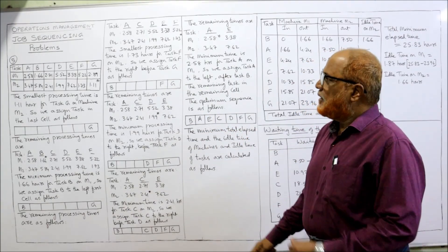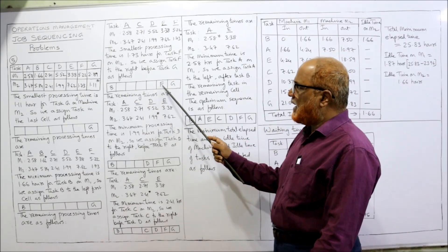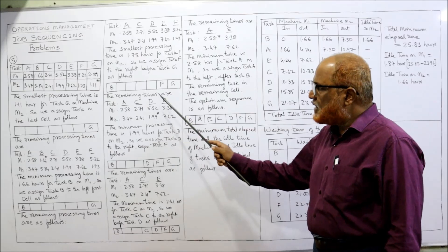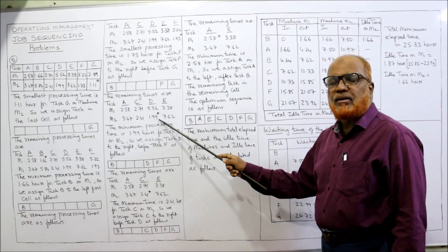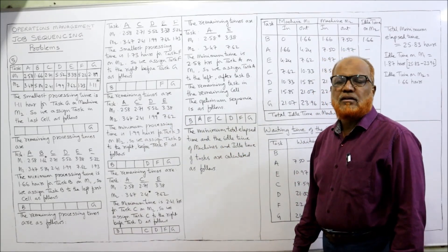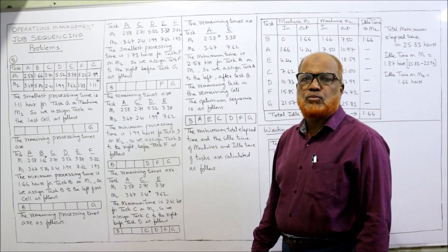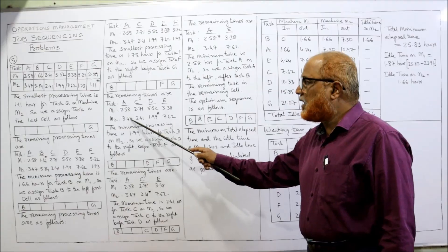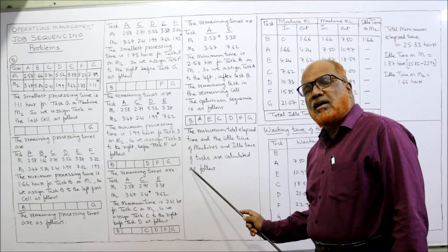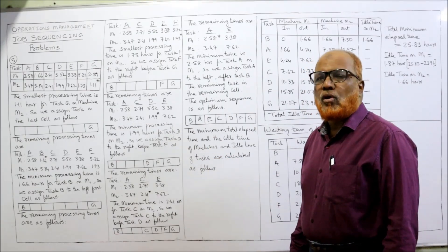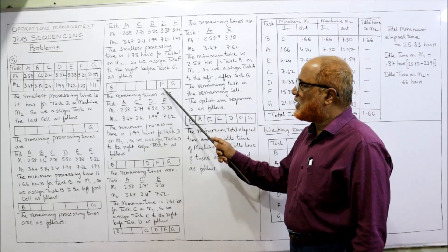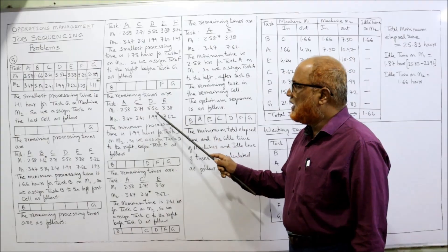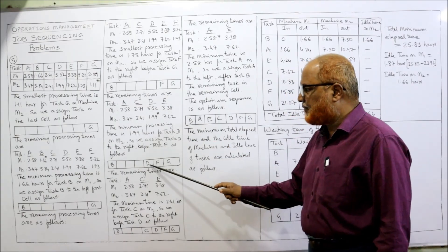Three jobs are completed: B, F, G. The remaining are A, C, D, E. The minimum time among these is 1.99, for task D on the second machine. Second machine means assign from the right. Two positions are already taken on the right, so D is placed before F: ...D, F, G.